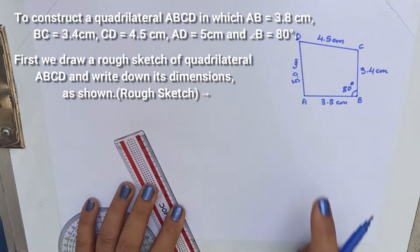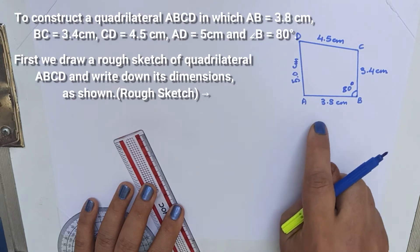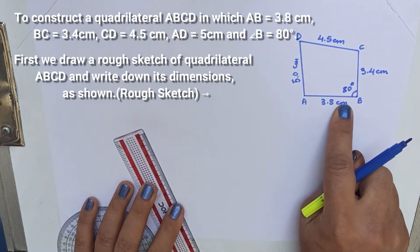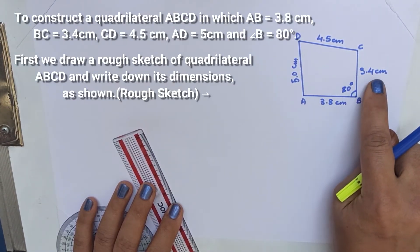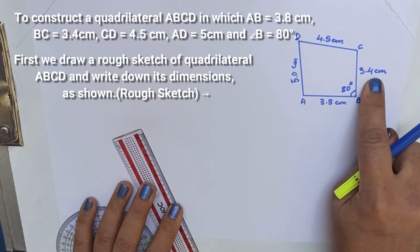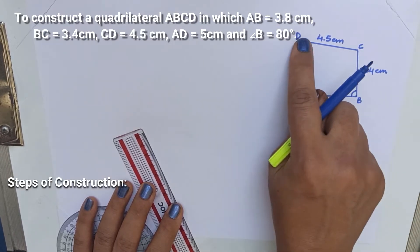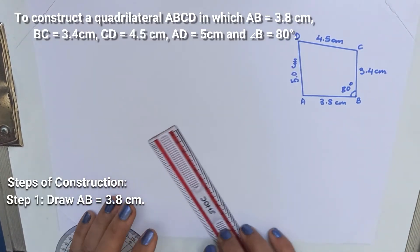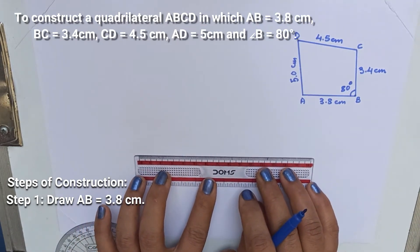To draw this quadrilateral, we will start with AB equal to 3.8 cm. Then we will draw angle B and BC equal to 3.4 cm. Then from point C and point A, we will construct two arcs to map point D.